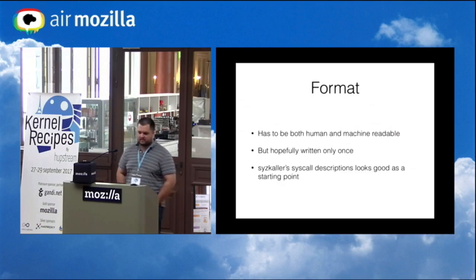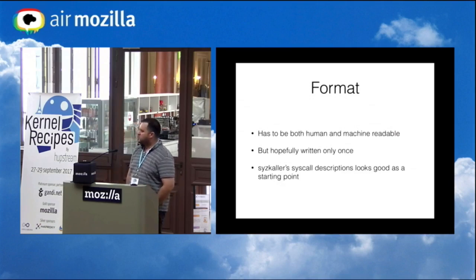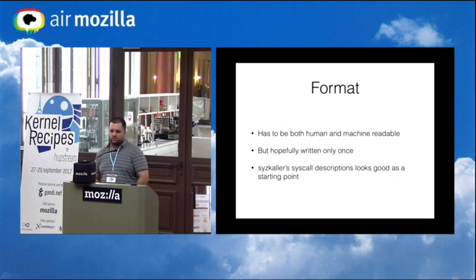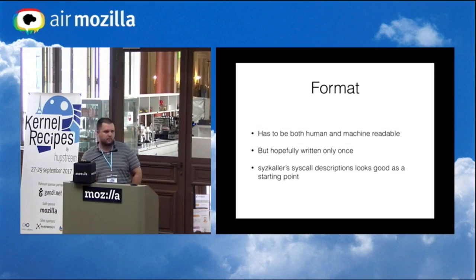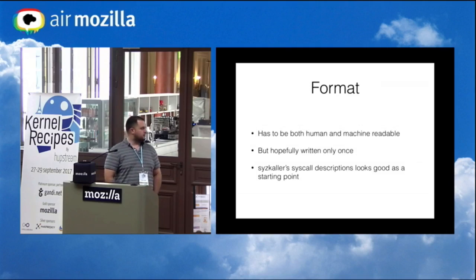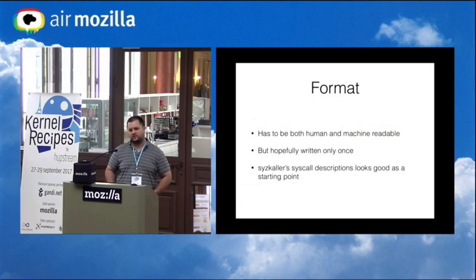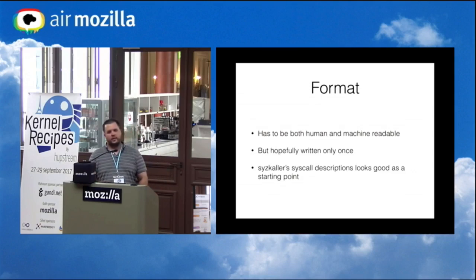The question is how would that contract look. We want it to be human readable — useful like man pages — but also machine readable so we can use it in user space libraries and in the kernel. We only want to write it once and not have parallel implementations. I'm hoping we could have some format and have conversion tools either from human to machine or machine to human.